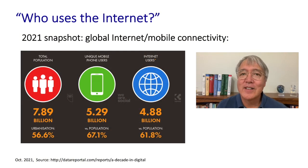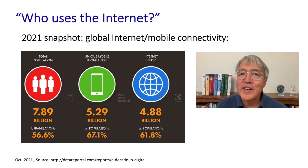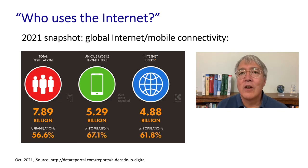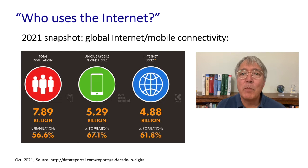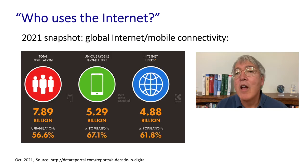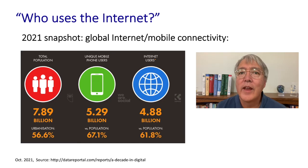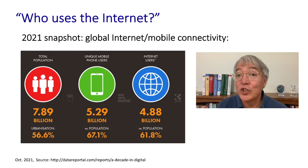Perhaps the simplest question we can ask is how many people worldwide use the internet today. Well, the ITU — the International Telecommunications Union — which is a specialized agency of the United Nations specializing in information communication technologies, estimates there are 7.89 billion people alive on the planet today. Of those, 5.3 billion, or 67% of the population, have mobile phones. And nearly 5 billion — almost 62% of the population — have internet access.